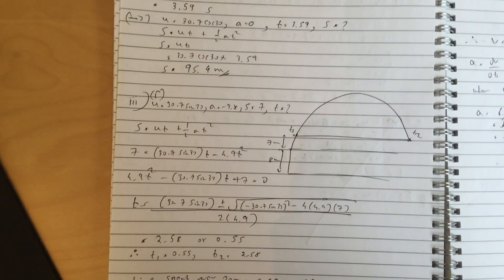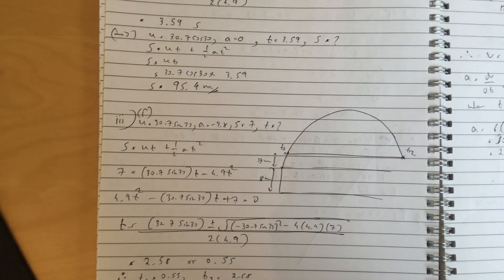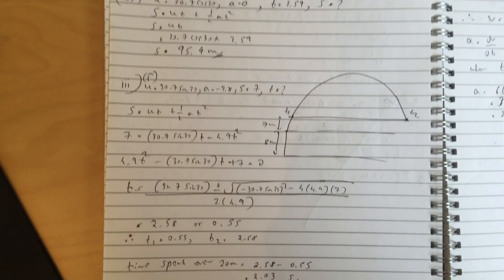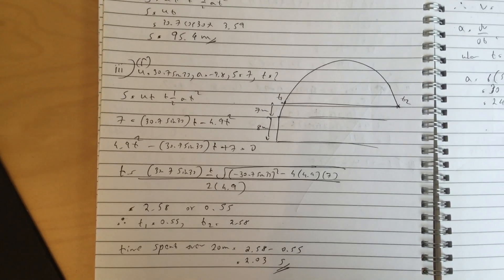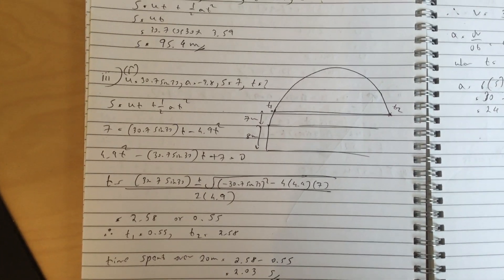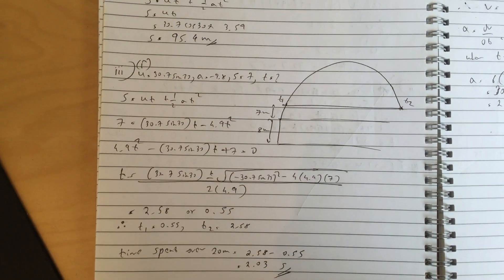Part 3, you simply make s equals to 7 because it's 15 meters over, and you get the quadratic, you solve it. You get t1 equals 0.55 and t2 equals 2.58. So that's 2.03 seconds over the 15 meter mark.